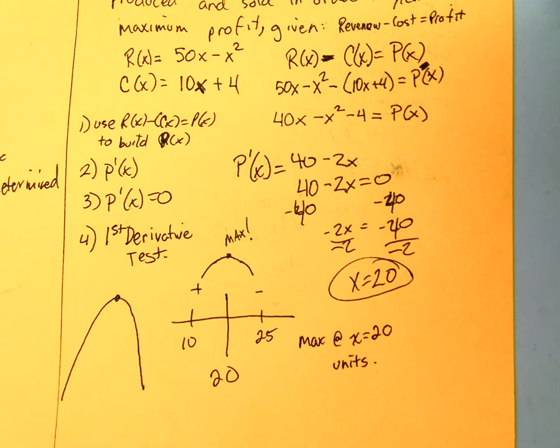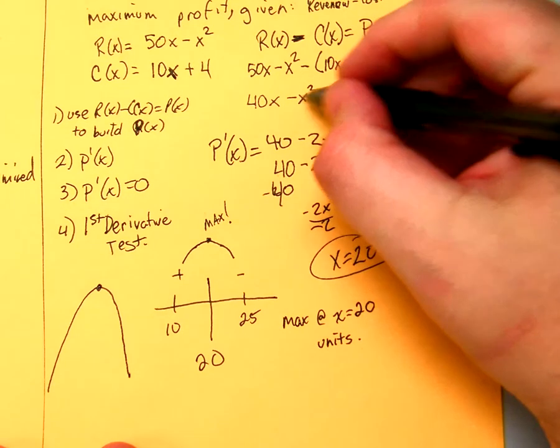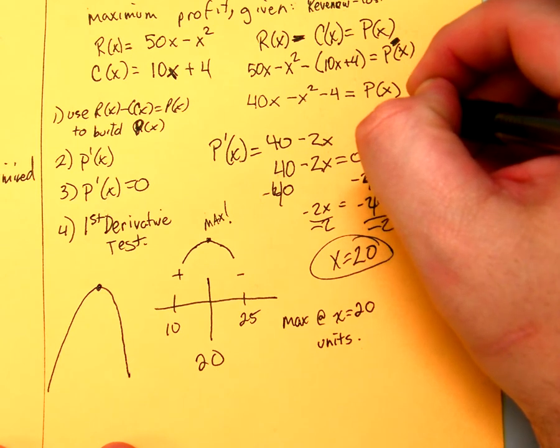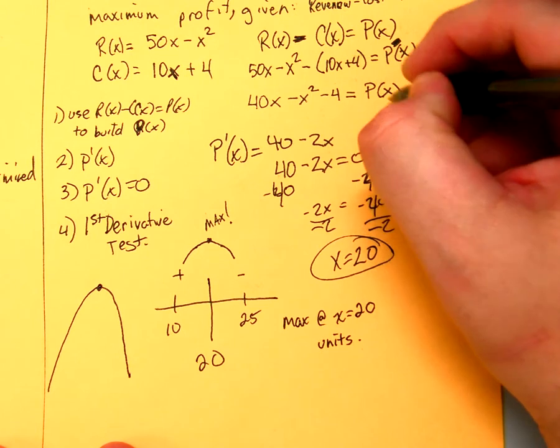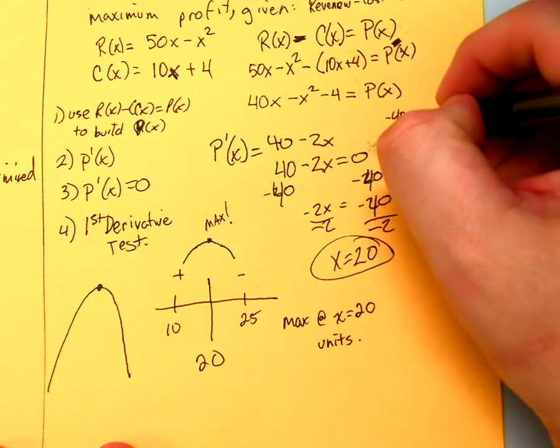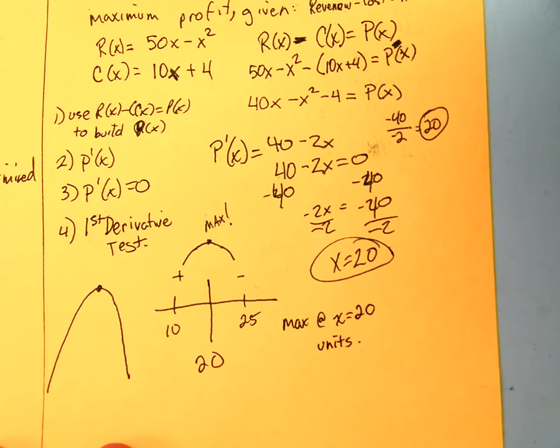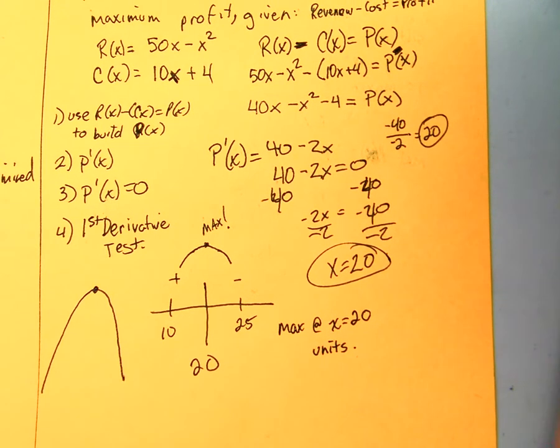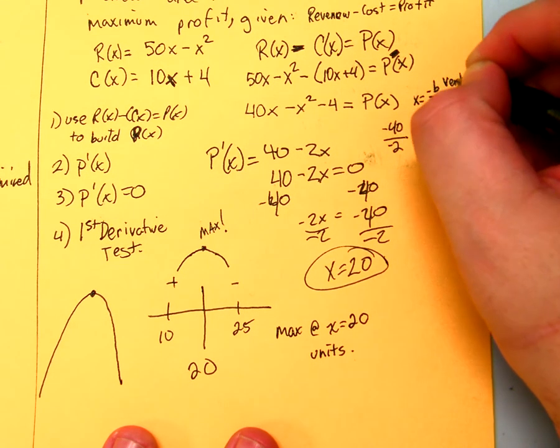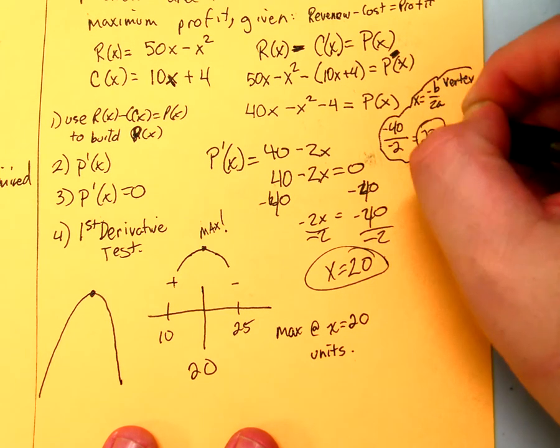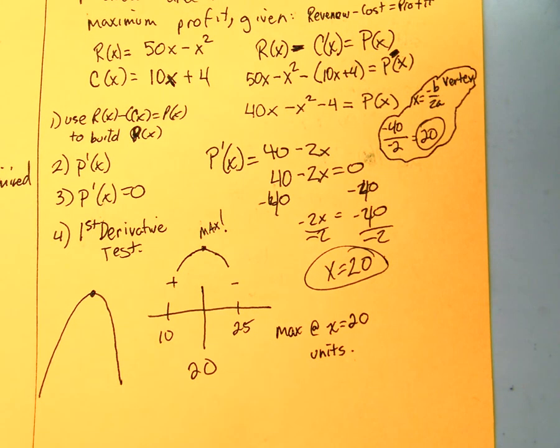Then you could have found the vertex. If you would have found the vertex, negative B, negative B, which would have been negative 40, over 2A, which would be negative 2, which is 20. Isn't that what we found here? So we found... You can find your X value in a different way if you forget the first derivative test too. Just remember what the nature of a quadratic function is. So there's a few different ways that you could have gone about that one.